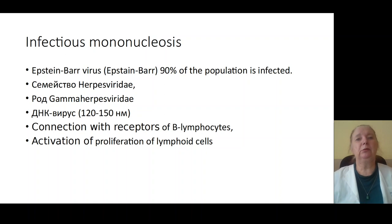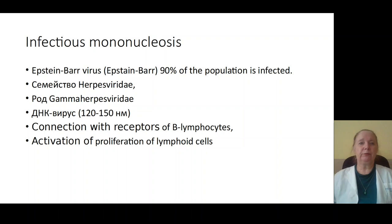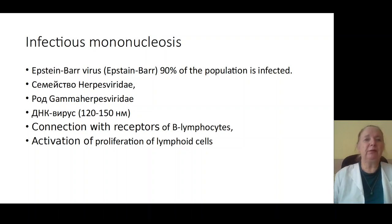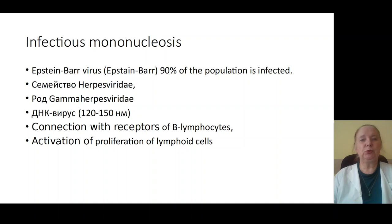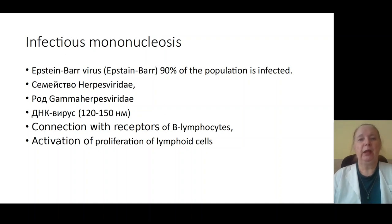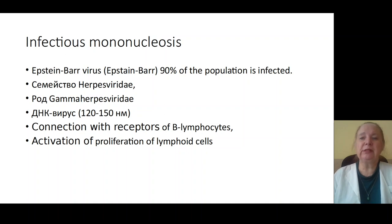The Epstein-Barr virus infects 90% of the world's population. It is a type of herpesvirus — specifically gamma-herpesvirus — a DNA virus with a size of 120 to 150 nanometers. The virus causes activation and proliferation of B-lymphocytes through connection with their receptors, causing that proliferation.